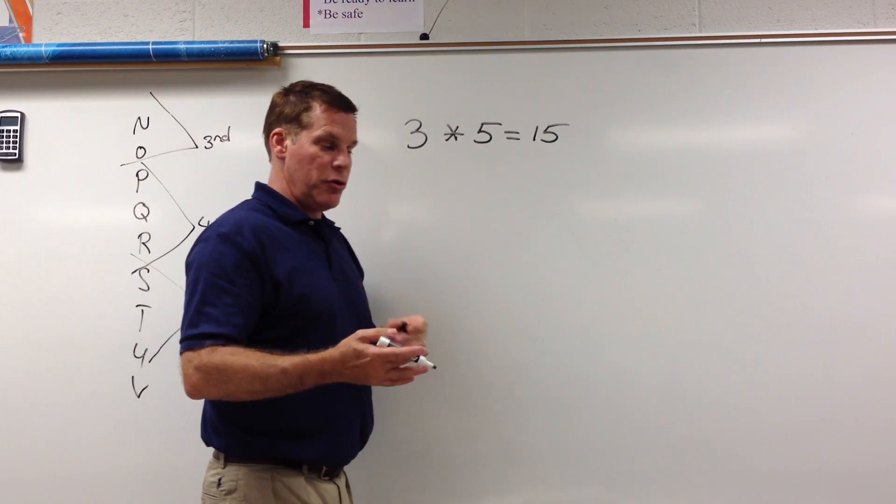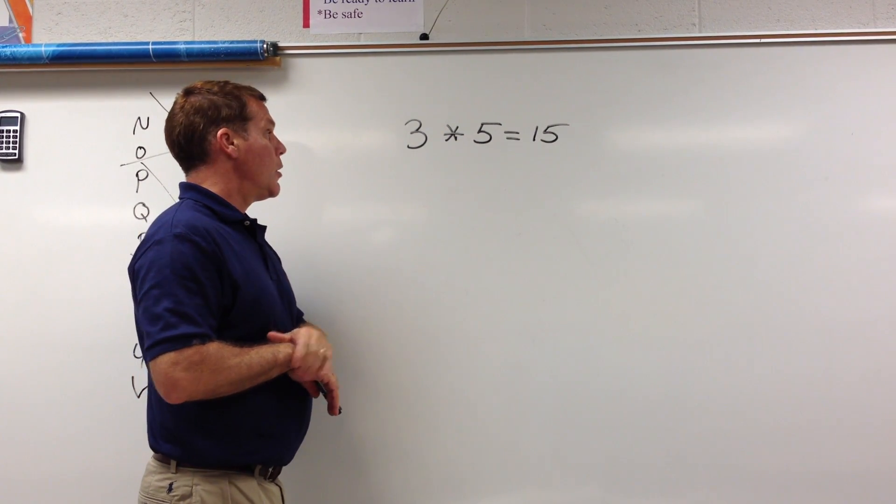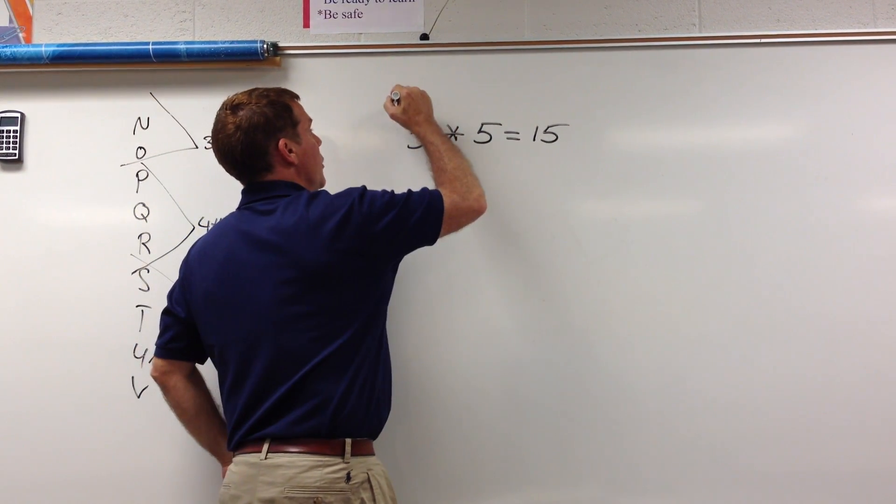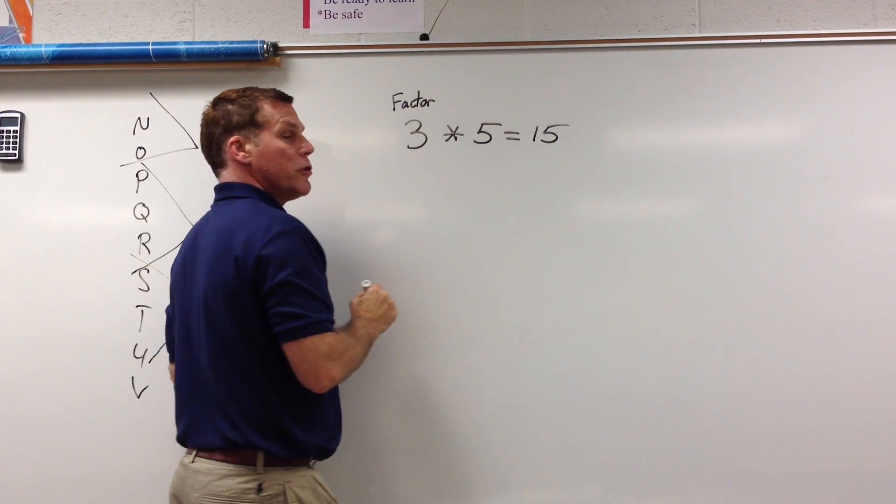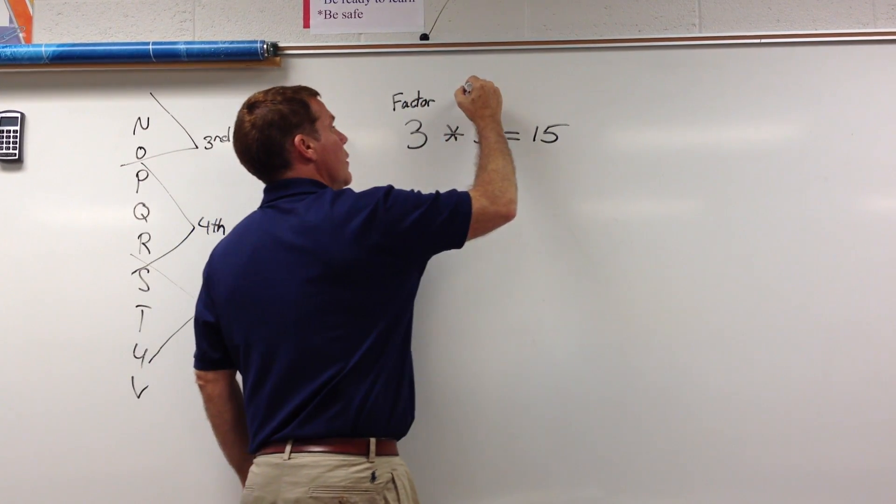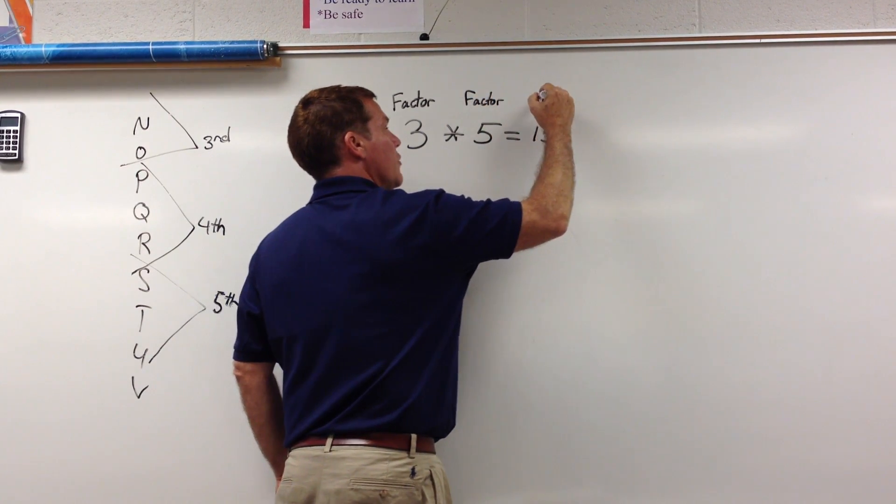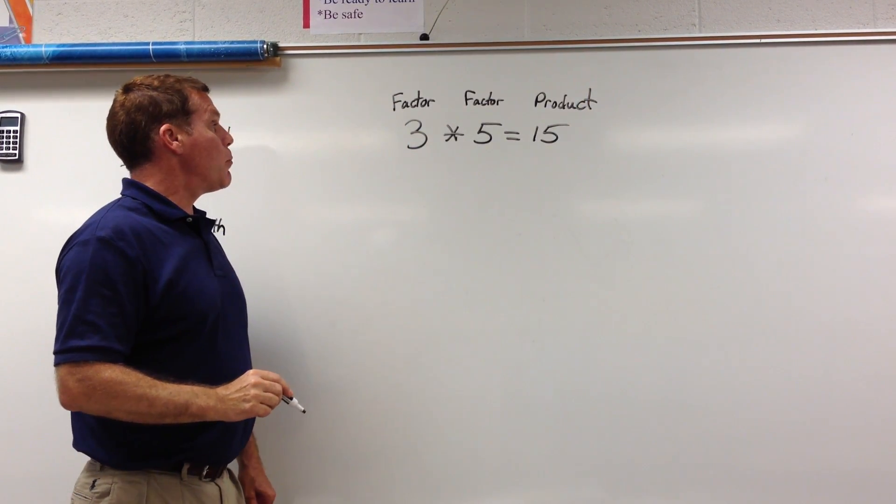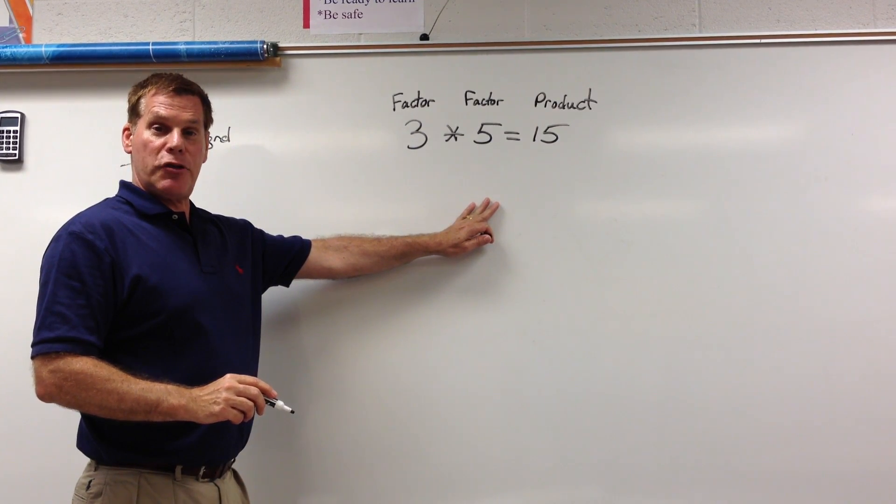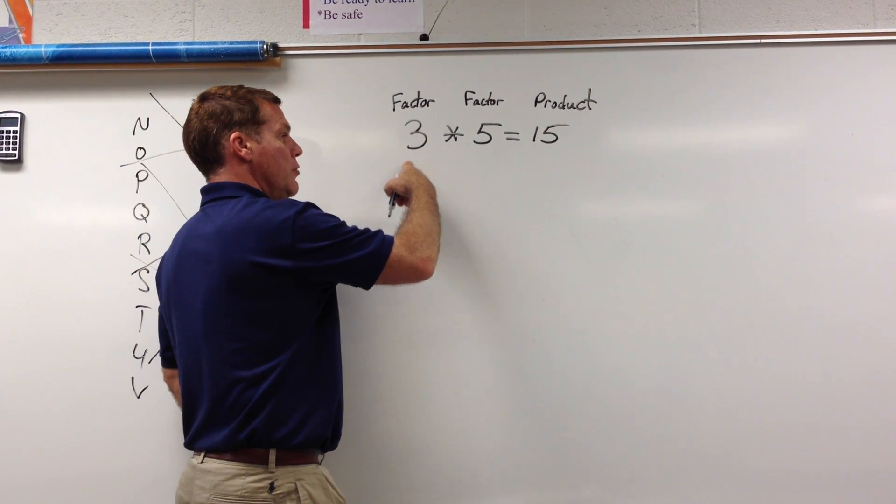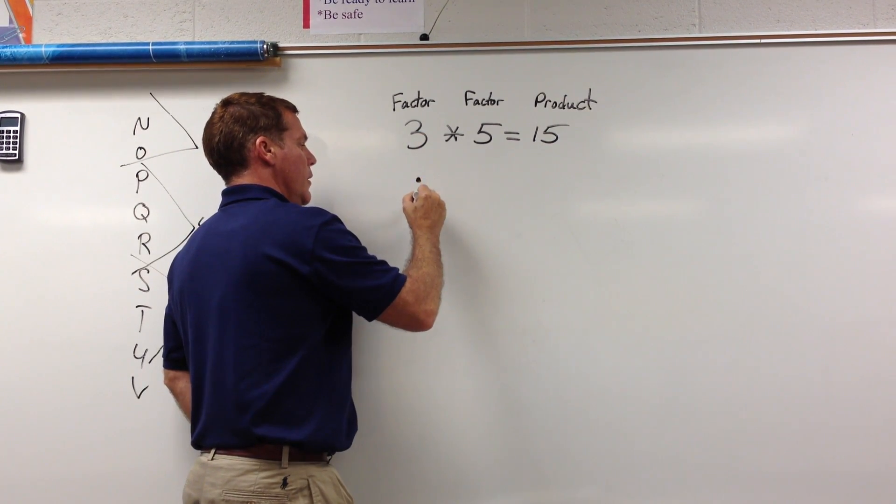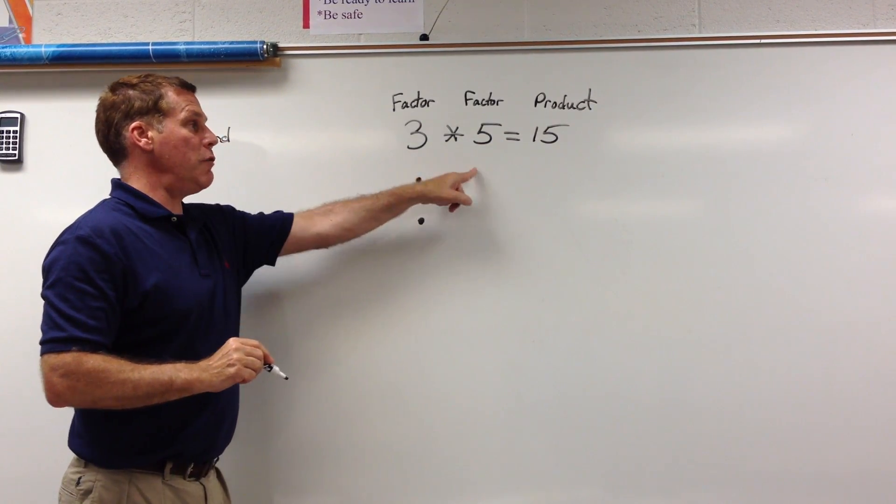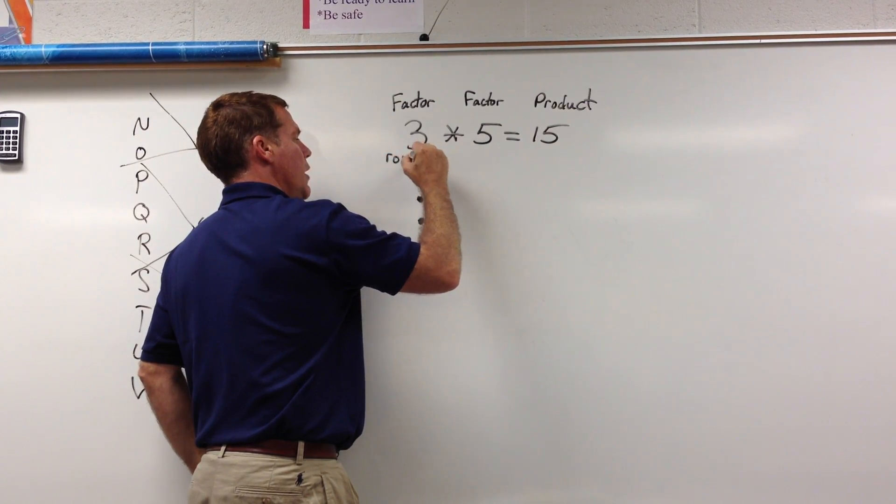The students' goal is that they're going to make arrays looking at a number model. Let me go ahead and make sure we understand that this is a factor—it is a number we multiply by another number to get a product. This is also a factor, and this is our product. How are we going to construct our arrays? The first number is the rows. The first number tells us how many rows are across. We're going to go straight up and down, so we're going to have three rows.